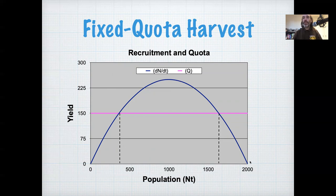Next, if we start at the carrying capacity, 2,000, and we've put this fixed quota in, at 2,000 the harvest rate is higher than the growth rate. And so the population will tend to decline, indicated by this blue arrow.